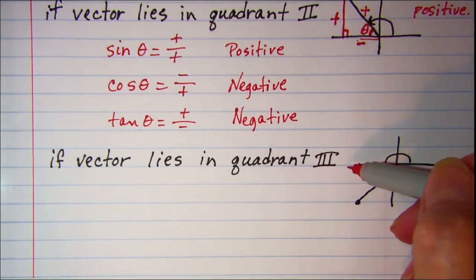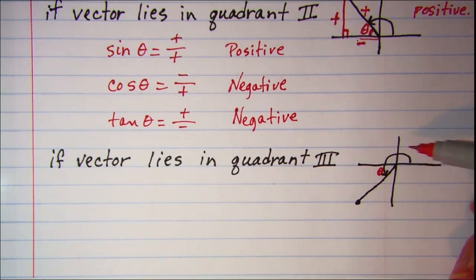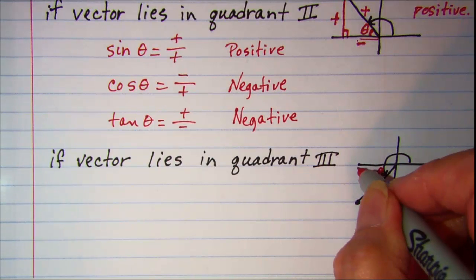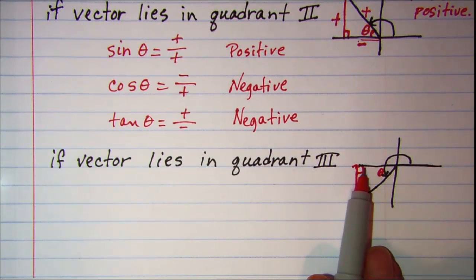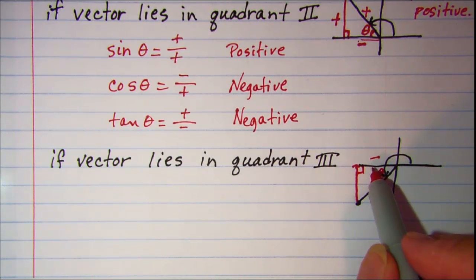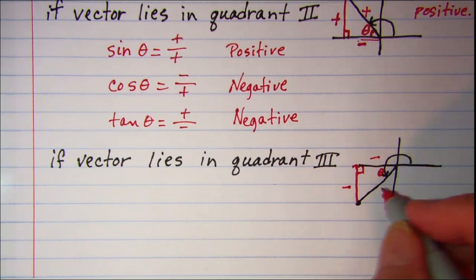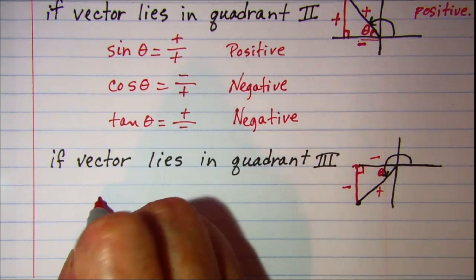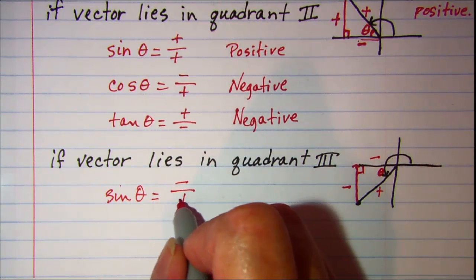If the vector lies in quadrant 3, the reference angle is the acute angle between the x-axis and the vector. Draw the perpendicular side to the x-axis. The horizontal component is negative because we go left from the origin, and the vertical component is negative because we go down. The hypotenuse is always positive. So the sine of theta is opposite over hypotenuse — negative divided by positive — which is negative.